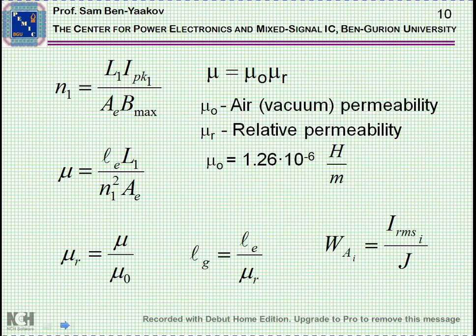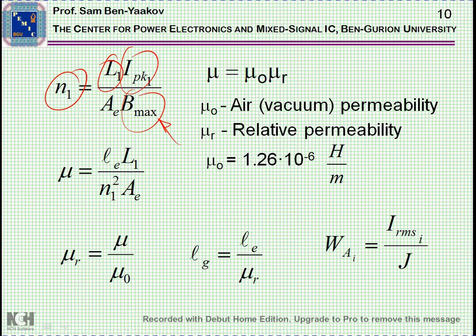So you've got these two numbers. And then, you go on and calculate the number of turns of the first winding from this equation. You know the inductance. You know the peak current. You know the Bmax you've set. And you've just found what is the AE of your specific core. You go ahead and calculate the permeability that you'd need for your design. L1 is given. N1 you've just found. AE from the catalog. And LE also you found in the catalog. And so, you can calculate what should be mu.